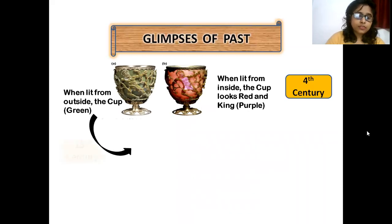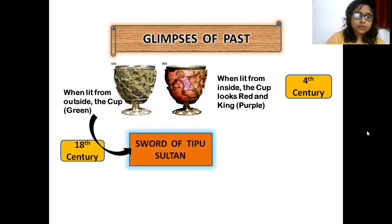Then, in 18th century, nanoparticles have been found in the sword of Tipu Sultan, the ruler of the Mysore Kingdom in India, which had a sword made up of Damascus steel.